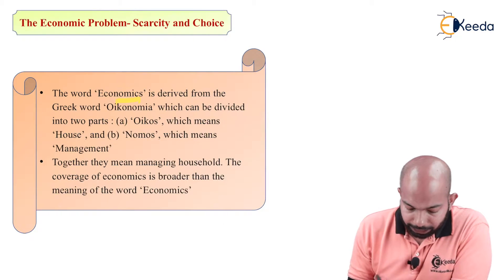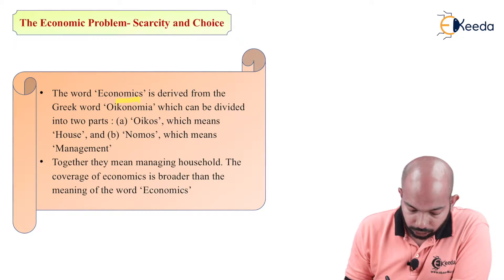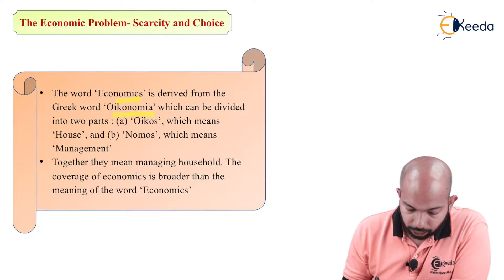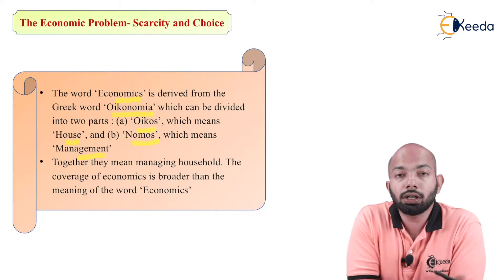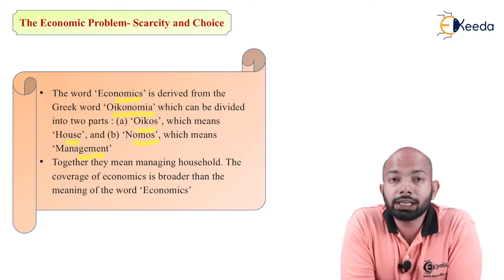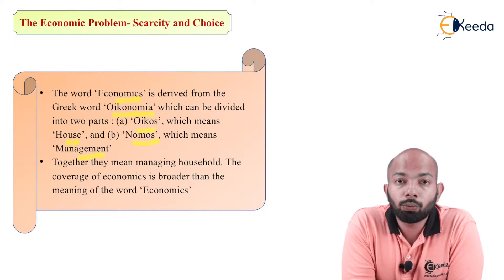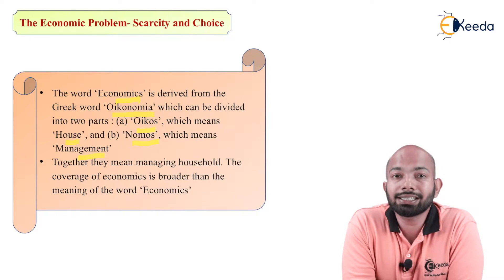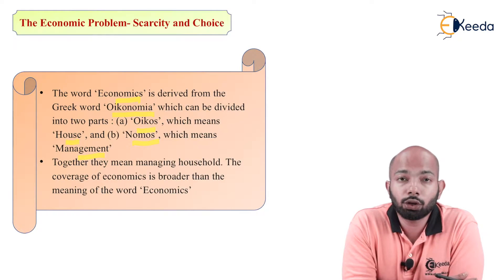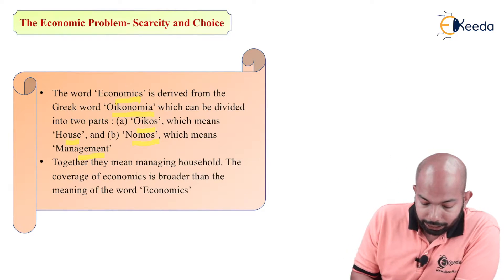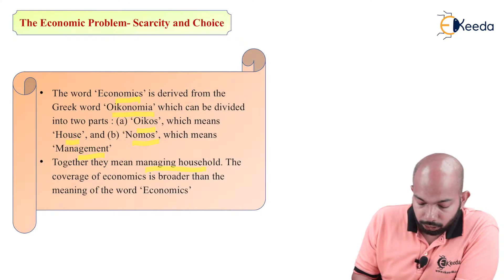The word 'economics' is derived from the Greek word 'oikonomia', which can be divided into two parts: 'oikos', which means house, and 'nomos', which means management. So the word economics comes from a Greek word meaning house management — basically, how you handle your house. Together, they mean managing a household.